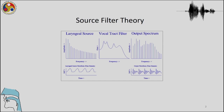We have learned that the glottal source has sinusoidal components, and these sinusoidal components go through the filter. The laryngeal source with its sinusoidal components undergoes vocal tract filtering, which has its own resonances, and as a result we have the output spectrum with properties of both the filter and the source.